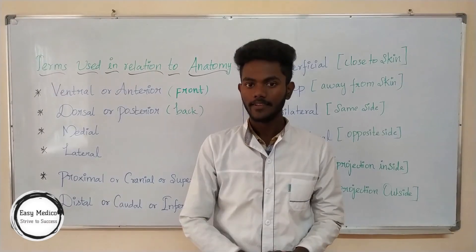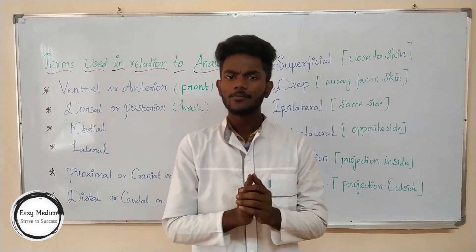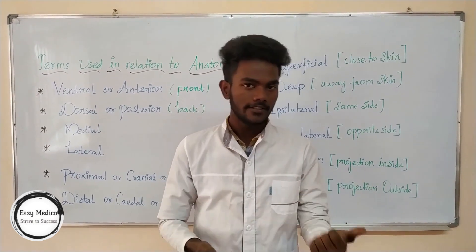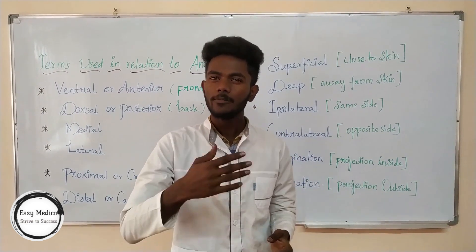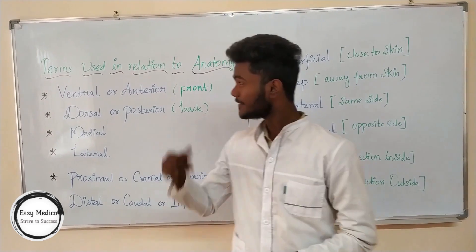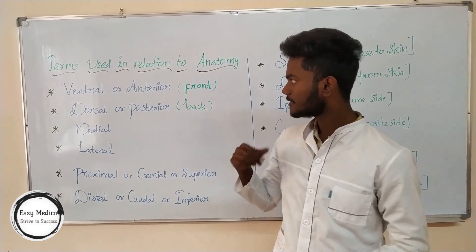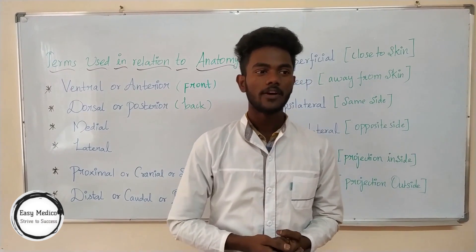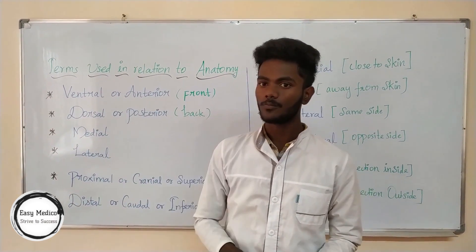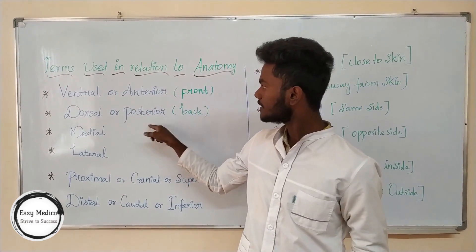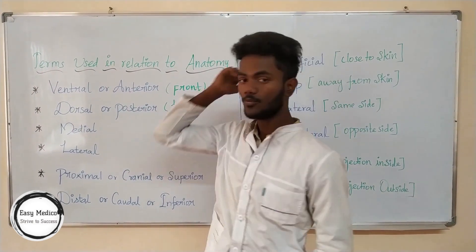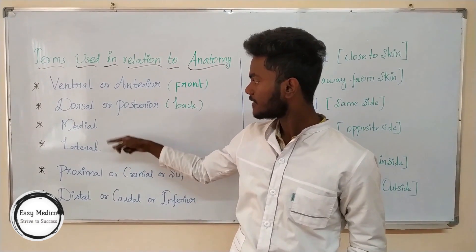Now let's look at the most important anatomical terms. We can differentiate the bones on the front side and back side. First: anterior or ventral — that is the front side. Dorsal or posterior — that is the back side. Anterior and posterior are opposites.